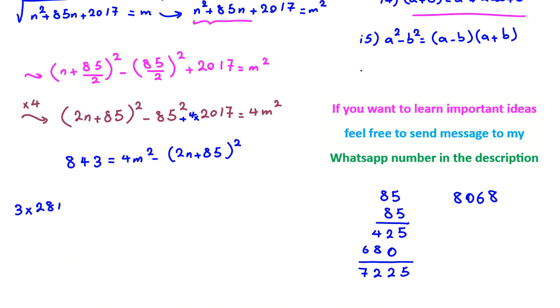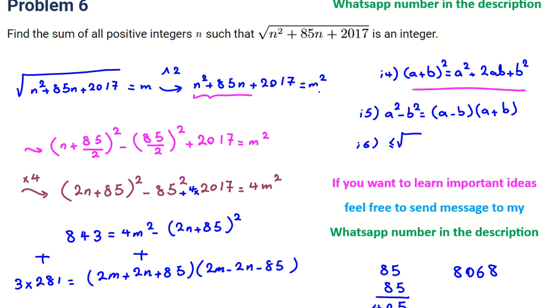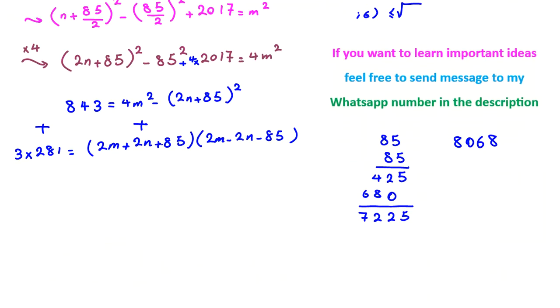If you want to check a number is prime, you should check up to square root of that, divisibility by prime numbers less than or equal to square root of that. So it's prime. And here we can apply the identity: it will be 2m plus 2n plus 85 times 2m minus 2n minus 85. We know this one is positive, because m and n are positive. Without loss of generality, we can consider m here is positive, and n from assumption of the problem is positive. So this one also has to be positive.